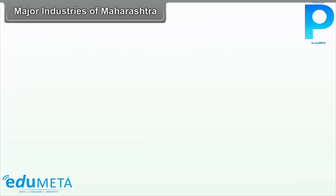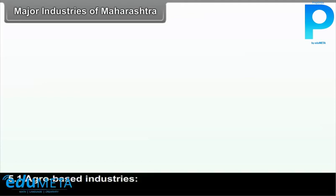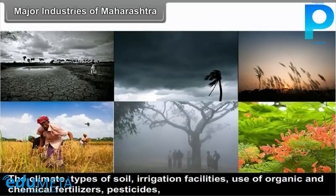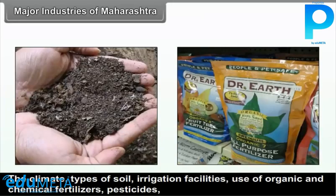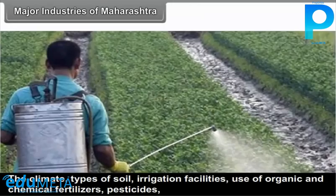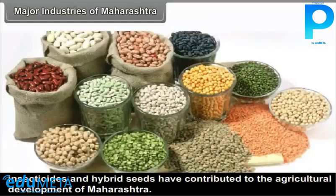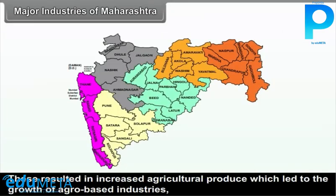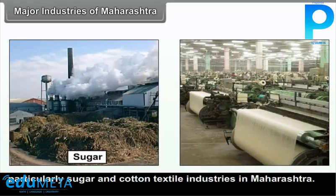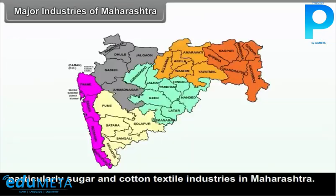The climate, types of soil, irrigation facilities, use of organic and chemical fertilizers, pesticides, insecticides and hybrid seeds have contributed to the agricultural development of Maharashtra. These resulted in increased agricultural produce, which led to the growth of agro-based industries, particularly sugar and cotton textile industries in Maharashtra.